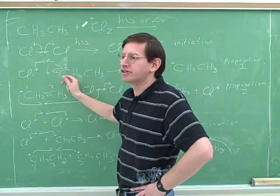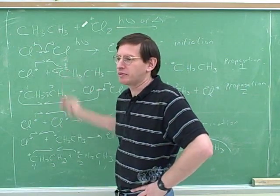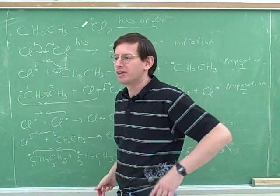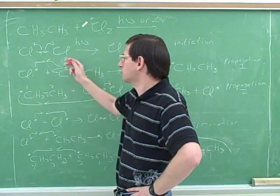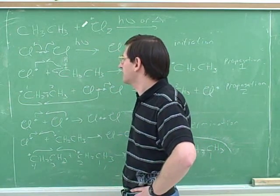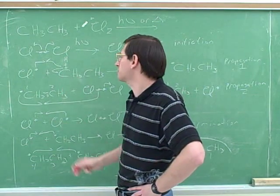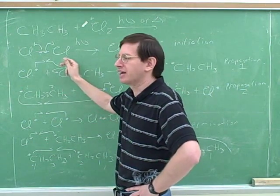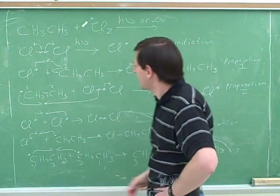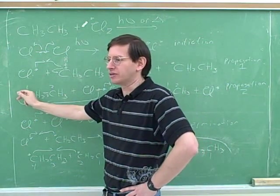That's how I can remember what happens in the propagation steps. First, we have to remove the hydrogen to make room for the chlorine. We can't add the chlorine first because there would be no room. We know that we're going to be substituting the chlorine for the hydrogen, but it doesn't make sense to add the chlorine first because there wouldn't be any room.